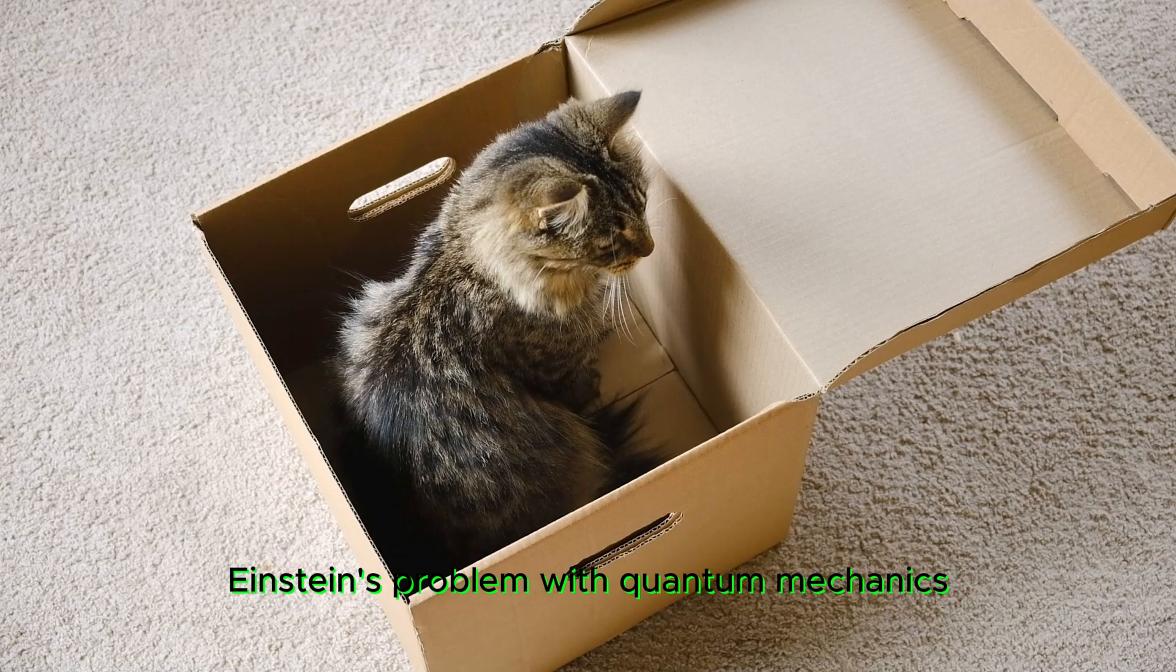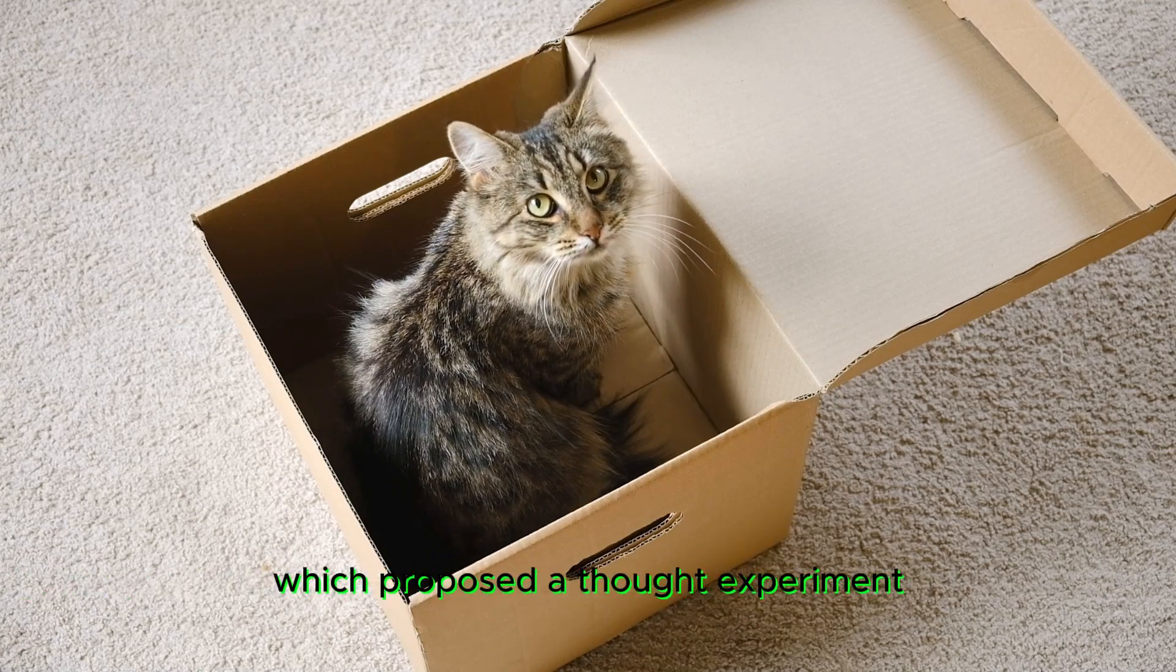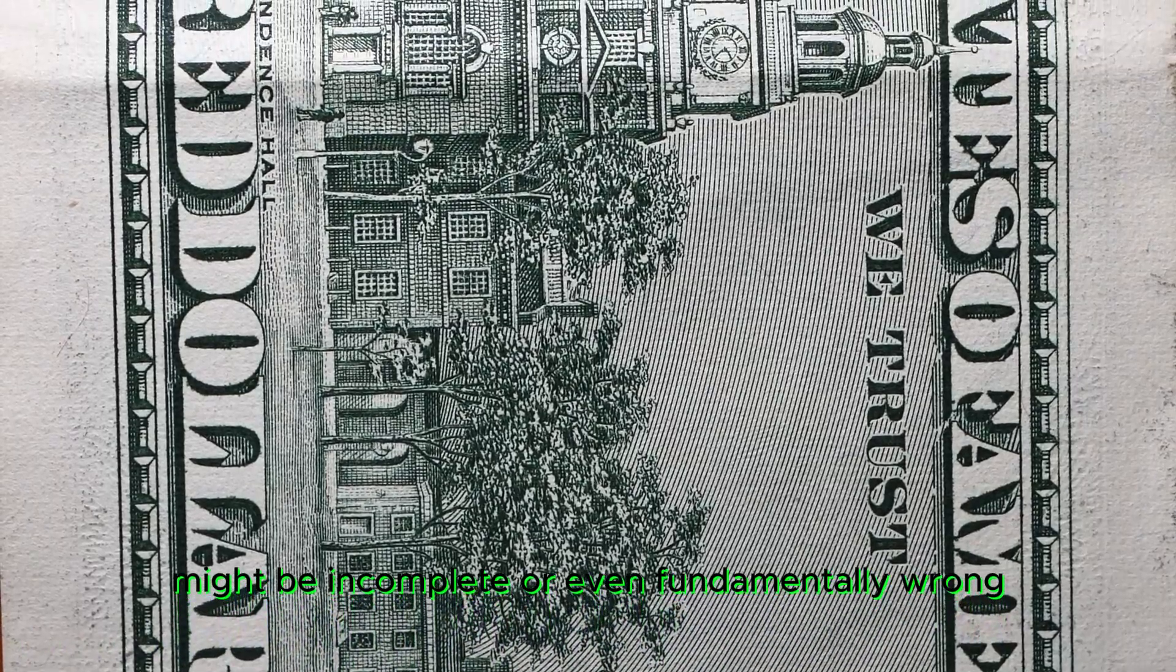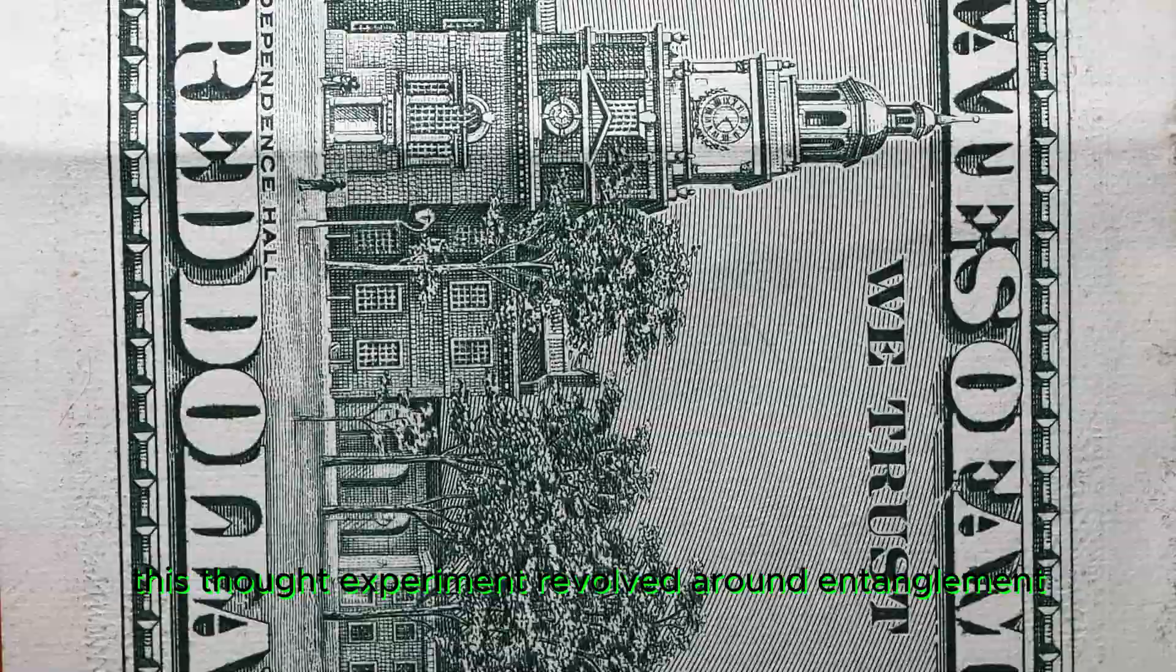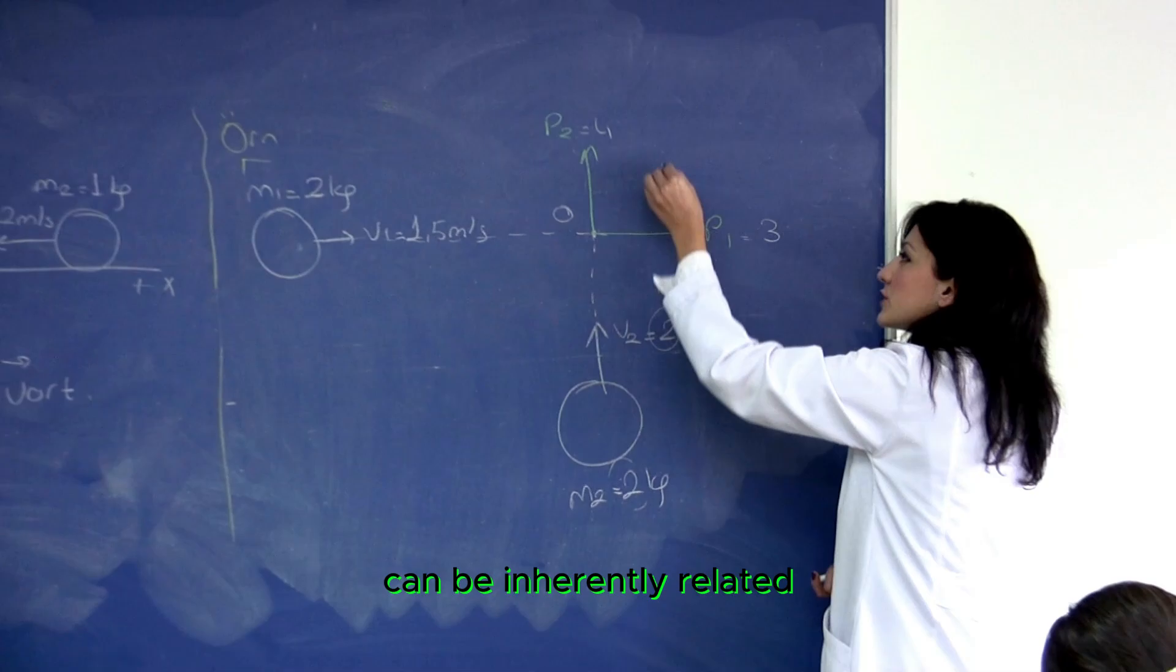Einstein's problem with quantum mechanics culminated in the EPR paper, which proposed a thought experiment highlighting that quantum mechanics might be incomplete or even fundamentally wrong. This thought experiment revolved around entanglement, the idea that the properties of two particles can be inherently related.